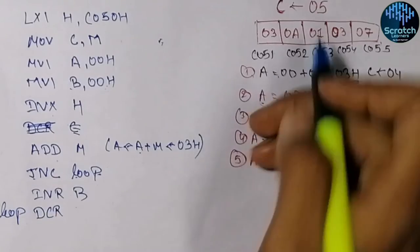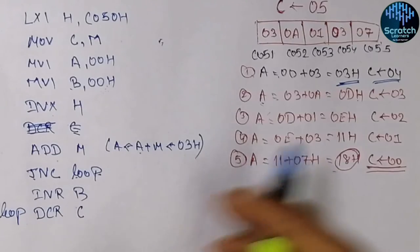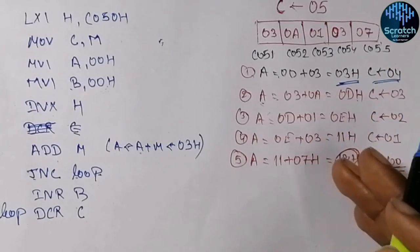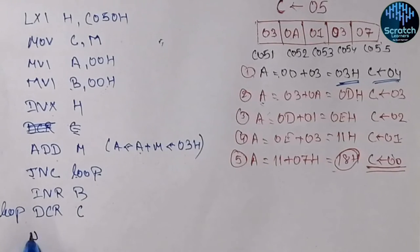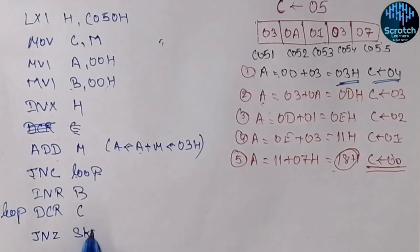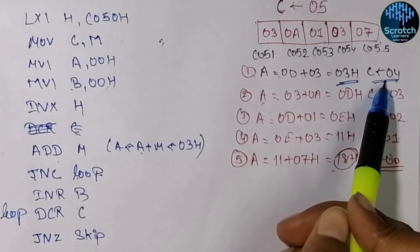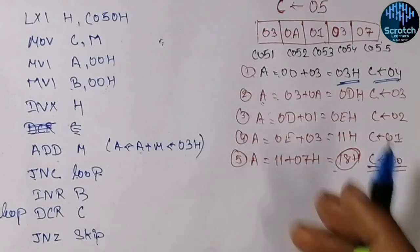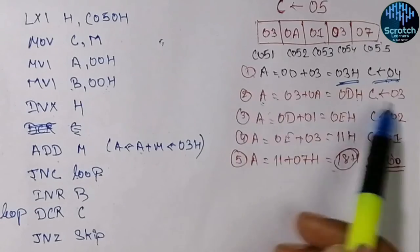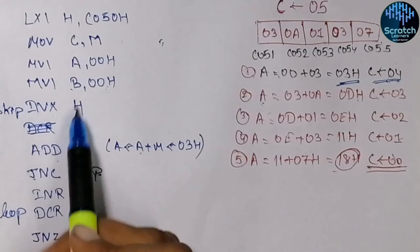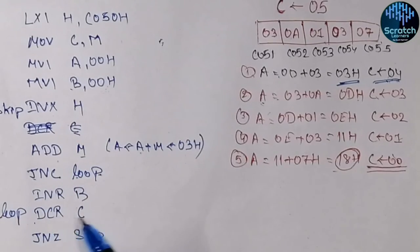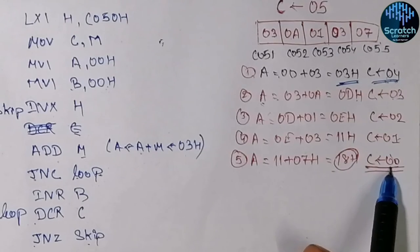Whether or not a carry was generated, the next step is to decrement the content of C. After decrementing, we check whether C has become 0 using the JNZ instruction — jump if not zero. If C is not equal to 0, it means we still have elements to process, so we jump back to INXH to again increment the pointer, add the next data, check for carry, and decrement C. This loop repeats until C becomes 00.